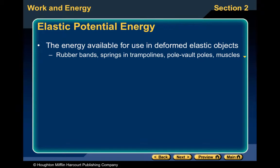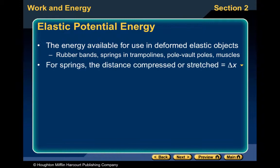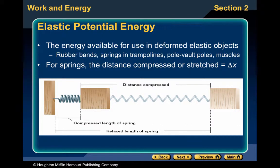Elastic potential energy is the energy available for use in elastic objects like rubber bands, springs on trampolines, pole vault poles, and muscles. The distance compressed or stretched is delta x. If a spring is relaxed, that's its natural length. If you push it in and compress it, the distance from the compressed position back to the relaxed position is your delta x.